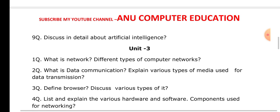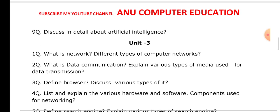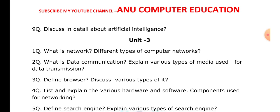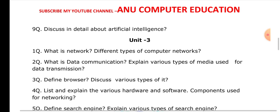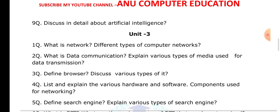List and explain the various hardware and software components used in a network. When connecting computers in a network, what are the physical, software, and hardware components being used? These include switches, hubs, gateways, and cables — whatever we are using, all of that has to be explained.